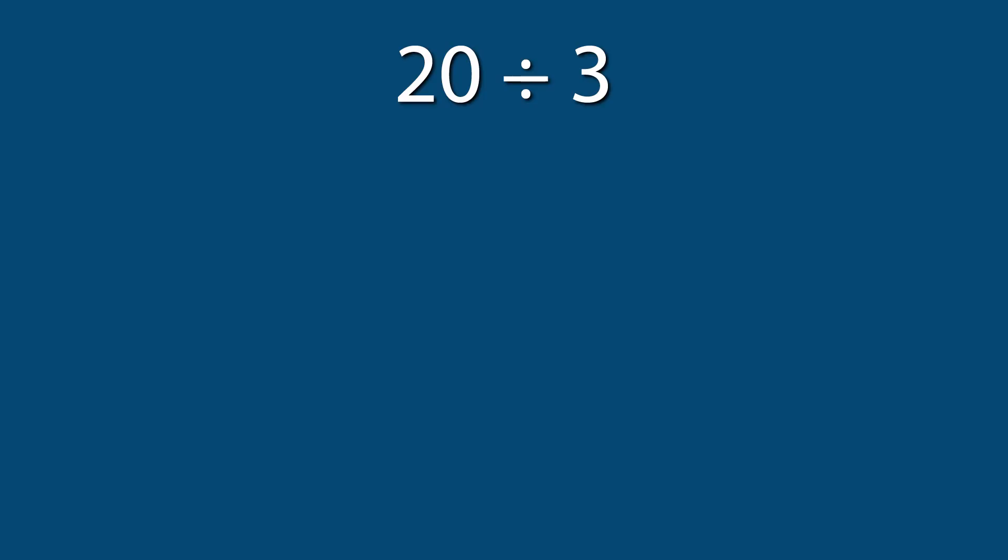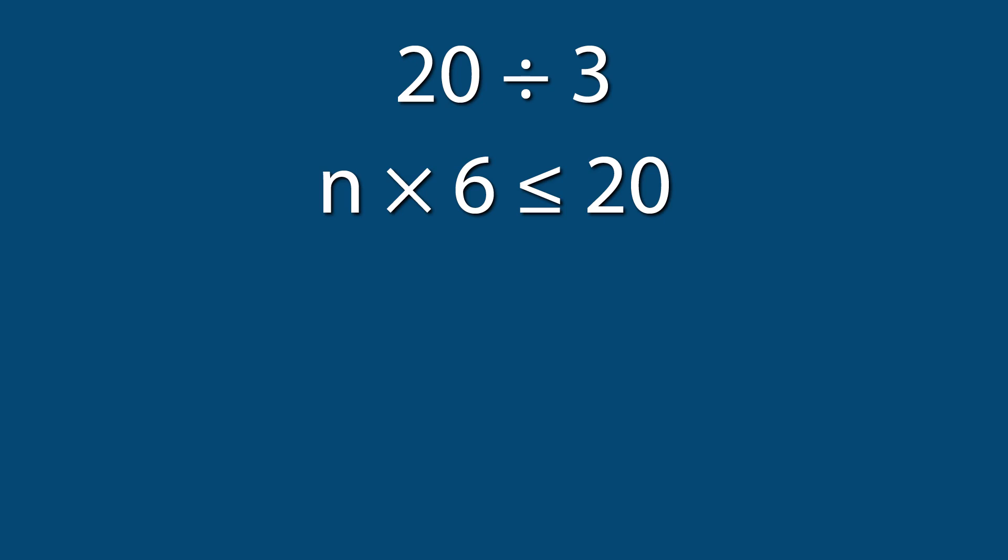So, if we were asked to solve 20 divided by 3, we must ask ourselves what can we multiply by 3 to get as close to 20 without going over 20? The answer is 6, because 6 times 3 equals 18. So, if we make 3 groups of 6, we would have 18.